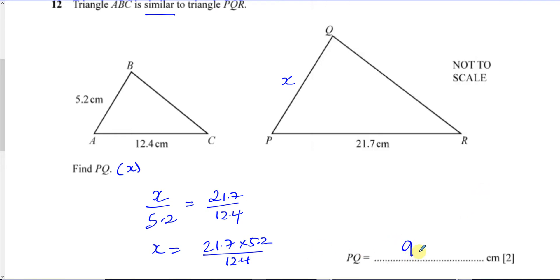That gives you 9.1 centimetres. There's no rounding needed. It's an exact answer. So 9.1, you don't need to write the centimetres because it's already there in the unit, in the answer space.